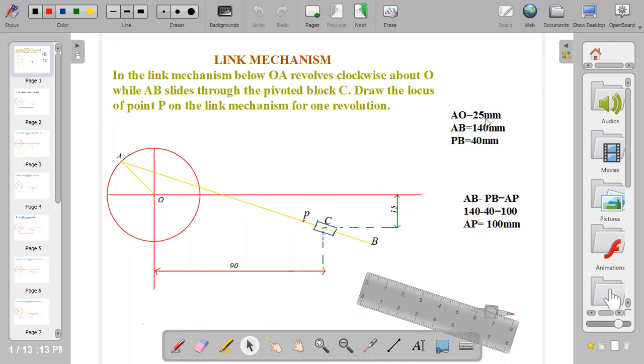We are given OA as 25mm, AB as 140mm, and PB as 40mm. OA is the radius of the circle, meaning the circle will be 50mm diameter. With radius 25 you'll be able to draw out the circle.